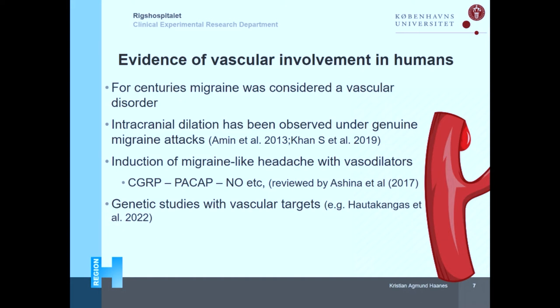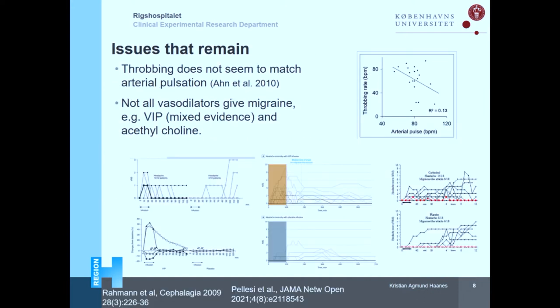There is some evidence for vascular involvement in humans. For centuries it was believed to be a vascular disorder — you had pain when you touched the arteries. You have observed intracranial dilation during genuine migraine attacks, and you can induce migraine-like headache in migraineurs with different vasodilators such as CGRP and nitric oxide. Also, many genetic studies show vascular genes potentially being involved. However, the throbbing seen in migraine patients does not seem to match the arterial pulse.